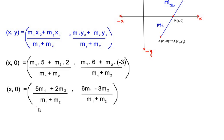Now here 5m₁ + 2m₂ over m₁ + m₂ represents the x coordinate. And 6m₁ - 3m₂ over m₁ + m₂ represents the y coordinate. So here since y is equal to 0, it becomes easy for us to substitute the y coordinate with the y coordinate of the point on the x-axis.